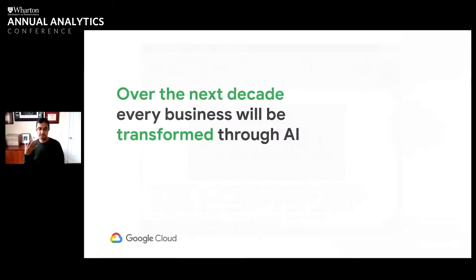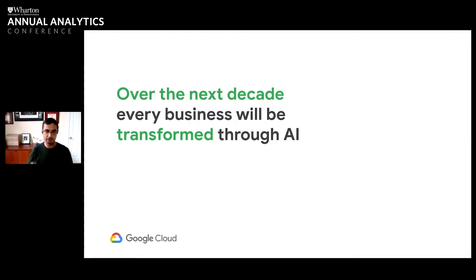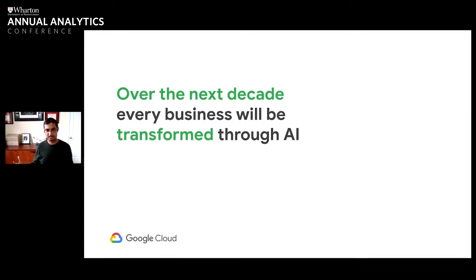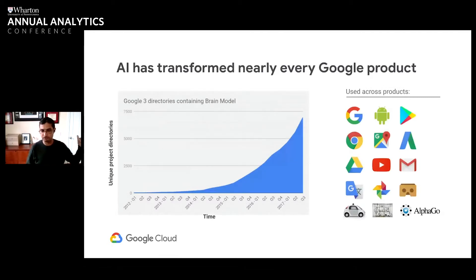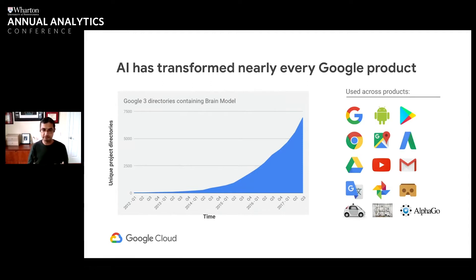We think that this is going to transform many, many industries over the course of the next 20 to 30 years. In fact, I predict that over the next decade, every business out there will be transformed through AI. Over the next 10 years, it'll be just like the Internet was to us in the 1990s — every business will go from just thinking about the Internet to having it be a fundamental part of what they do. For us here at Google, AI has gone from being something that we use in a few products to something that we're now using in every product. Just about every product you know from Google is using AI in one way or another to help the end user.